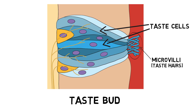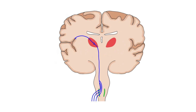Tastants interact with taste receptor cells through a number of different mechanisms to depolarize the cells. When taste cells are depolarized, they release neurotransmitters that stimulate sensory neurons that travel on cranial nerves 7, 9, and 10.